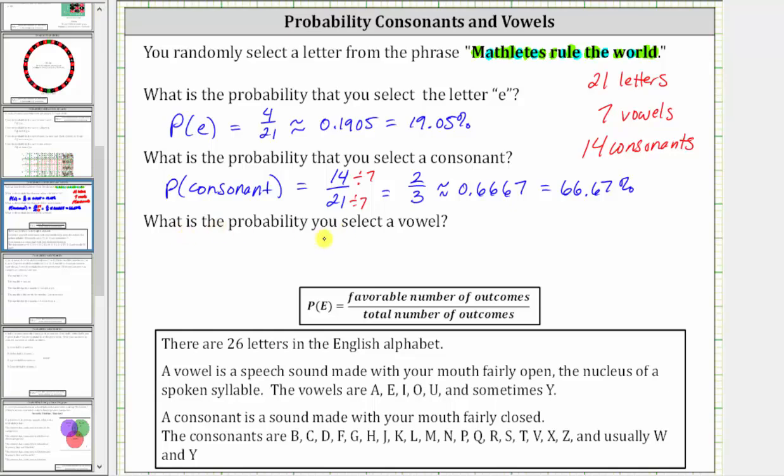And because there are seven vowels, the probability you select a vowel is going to be 7 divided by 21, or 7/21, which simplifies to 1/3, if we divide both seven and 21 by seven.